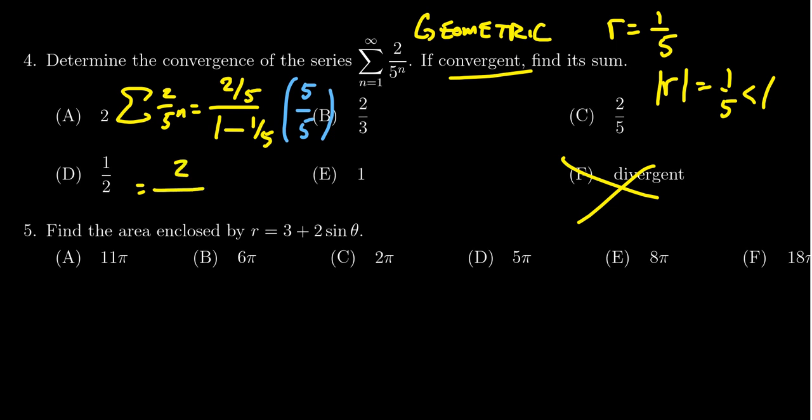In the denominator, you distribute the 5. You're going to get 5 minus 1. So this gives me 2 over 4, which gives me one half. So we see that the correct answer is that this series is convergent and the sum is equal to one half.